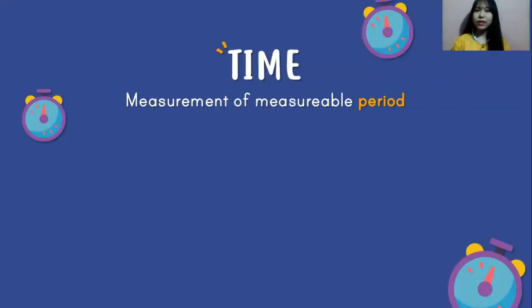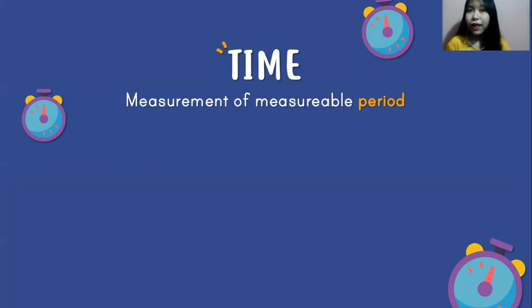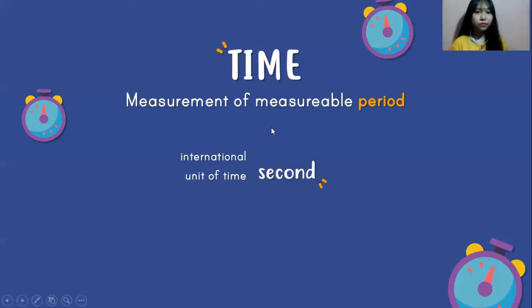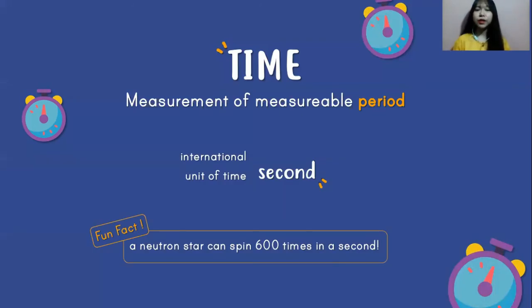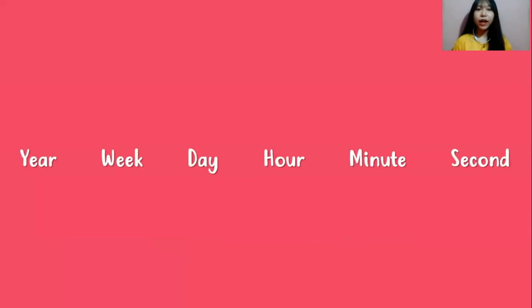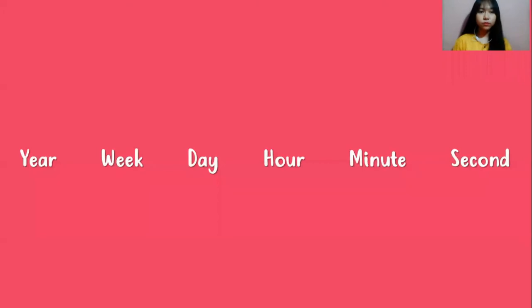Here comes the last quantity we're going to learn today: time. Basically, time is a measurement of a measurable period, and the international unit of time is second. Fun fact: there is a neutron star that can spin 600 times in a second — amazing! We are familiar with year, week, day, hour, and minute. We can also convert from one unit to another: 1 year equals 52 weeks, 1 week equals 7 days, 1 day equals 24 hours, 1 hour equals 60 minutes, and 1 minute equals 60 seconds.